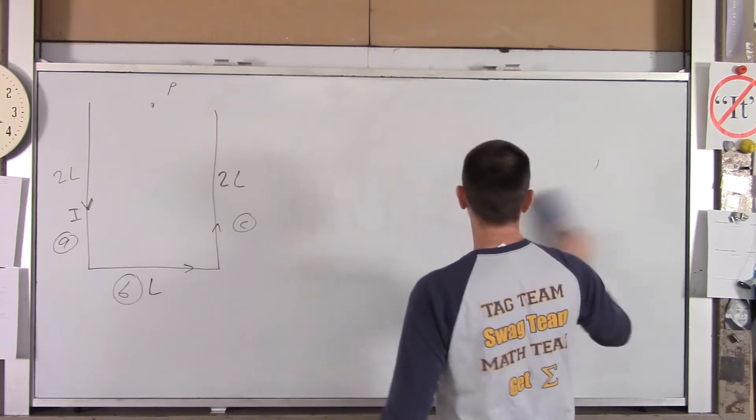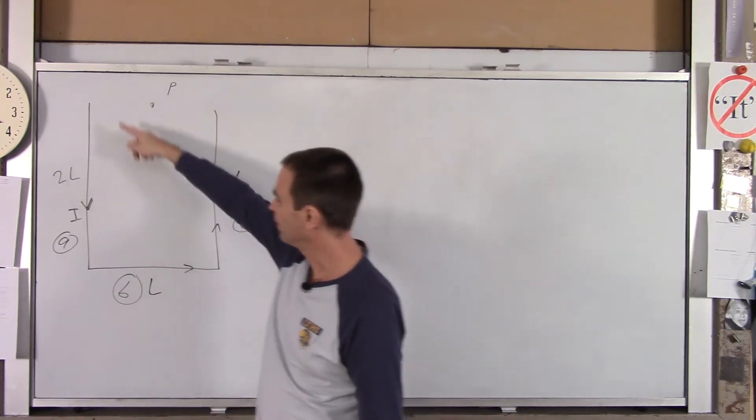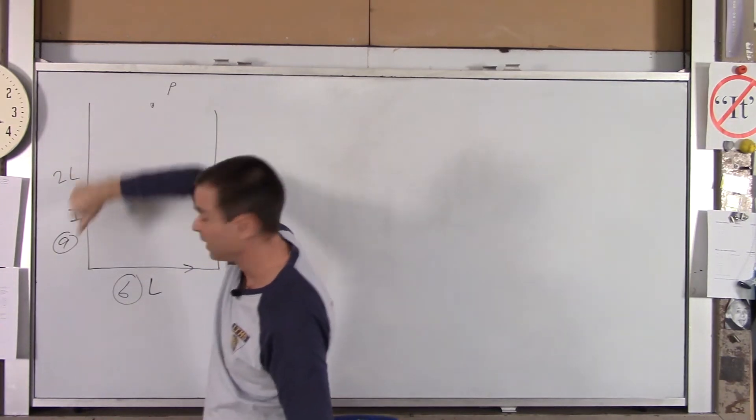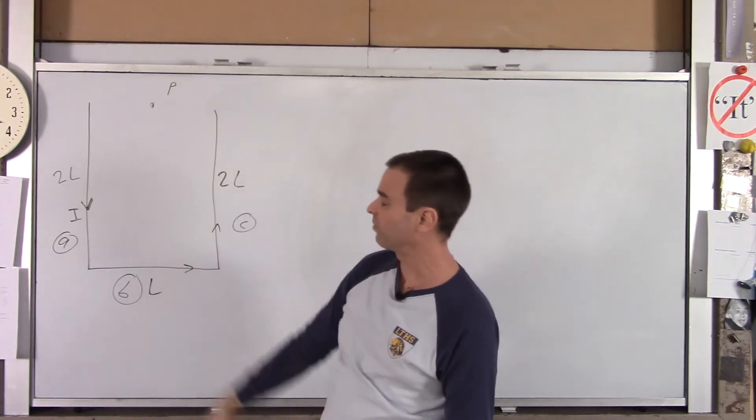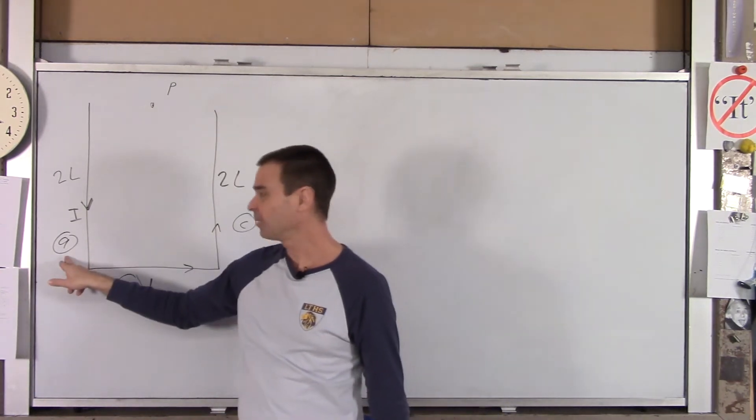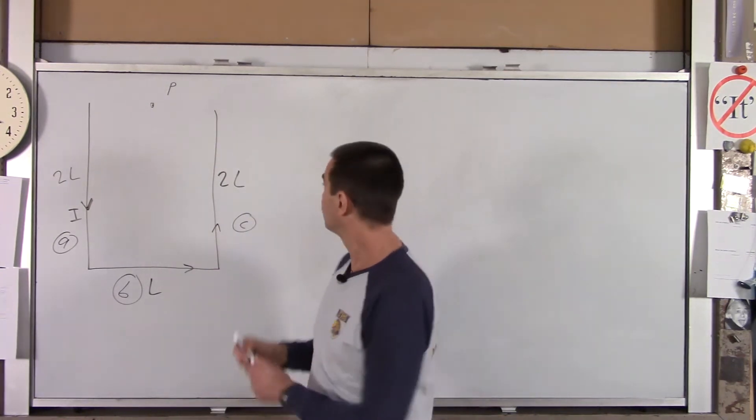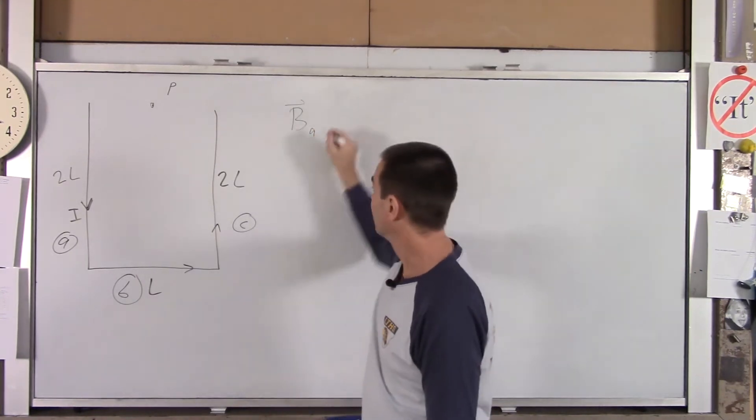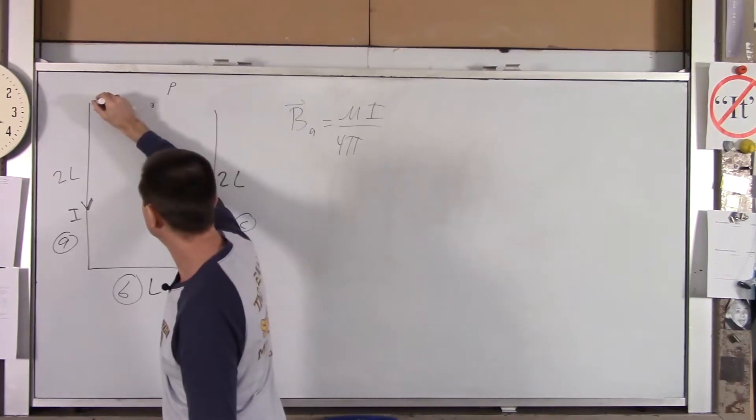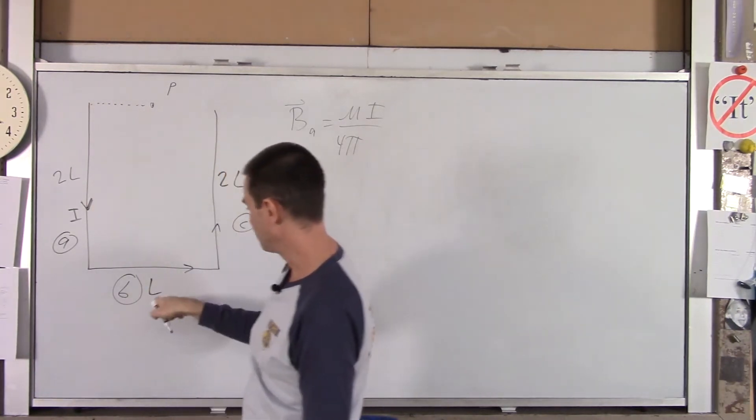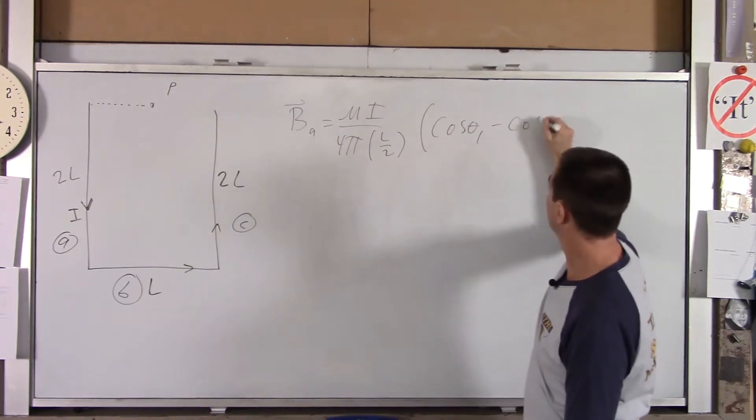Now, as far as this problem goes, I hope you'll note that the magnetic field created by A, which is out of the page, and the magnetic field created by C, which is out of the page, are going to be equal in magnitude. It's the same length of wire, the same distance away from point P at all points. So basically, I'm going to find the magnetic field created by A, I'm going to double it. That'll be A plus C. And then onto that, I will add B in a moment. So we're going to start with the magnetic field created by segment A. So that's mu naught I over 4 pi. Now, what's a in this case? Well, a is the perpendicular distance from the wire to point P, which is half of that length. So that's L over 2. And then we've got cosine theta 1 minus cosine theta 2.